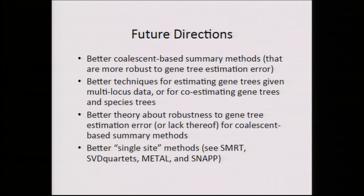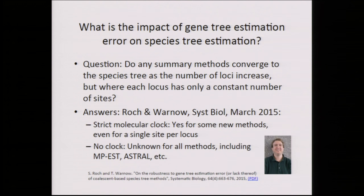Some single-site methods are now being used to great advantage. On the theoretical question of the impact of gene tree estimation error: Sebastian Rocca and I addressed this asking if you bound the number of sites per locus and let the number of loci increase, do any methods remain statistically consistent? The answer seems to be: if you have a strict molecular clock — evolution exactly proportional to time — then many methods are statistically consistent even with a single site per locus. But if you do not have a strict molecular clock, we have no positive results. So the conditions under which methods are statistically consistent are unrealistic, and it comes down to empirical performance.